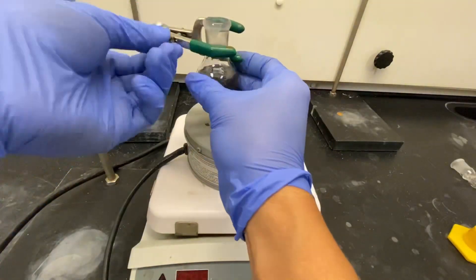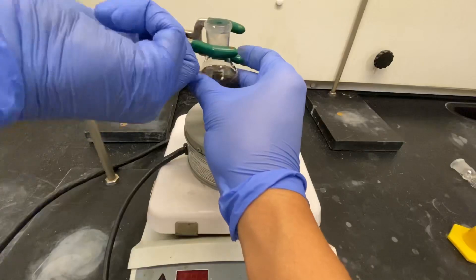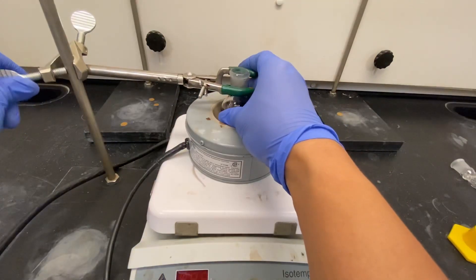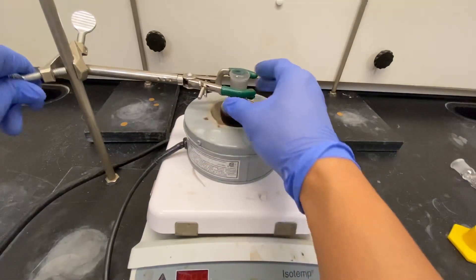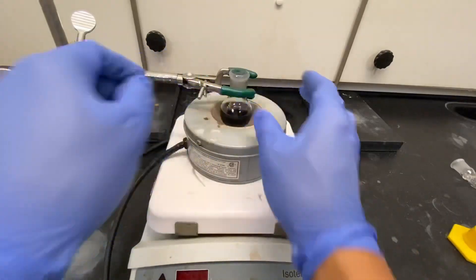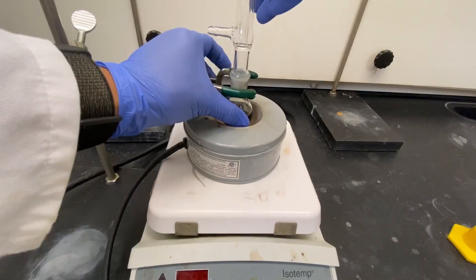Set up the reflux apparatus. Place the flask inside the well of the heating mantle without touching the surface of the mantle. Place the condenser and turn on the cooling water.